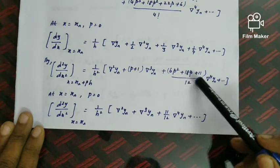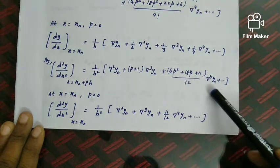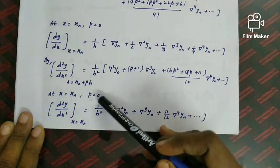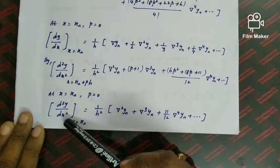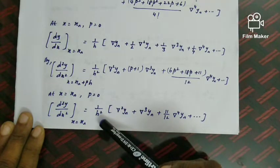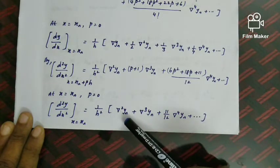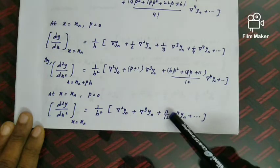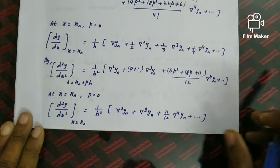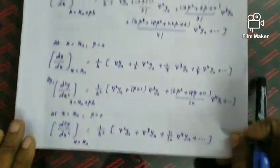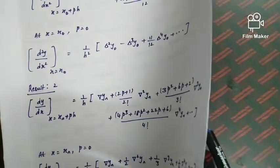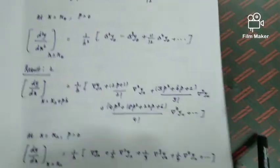When p = 0 and x = xₙ, the second derivative using backward difference becomes d²y/dx² = (1/h²)[∇²yₙ + ∇³yₙ + (11/12)∇⁴yₙ + …]. This is the result for the second derivative using backward difference. Result 1 uses forward difference, Result 2 uses backward difference — this is numerical differentiation.